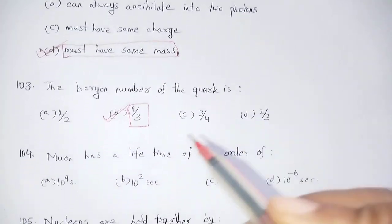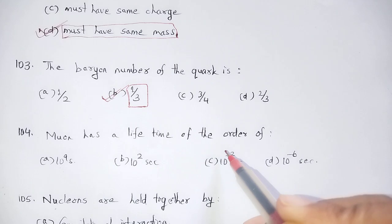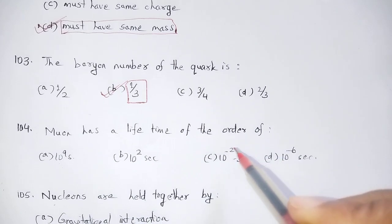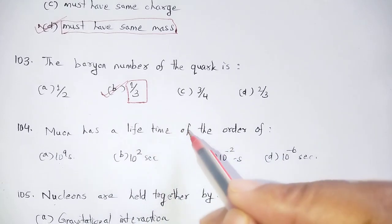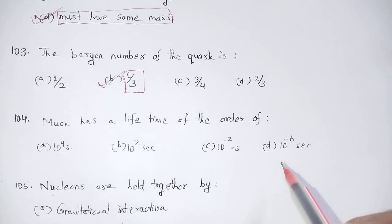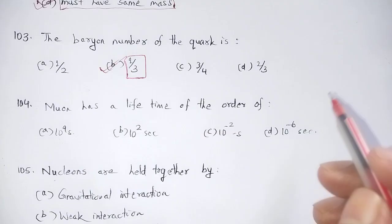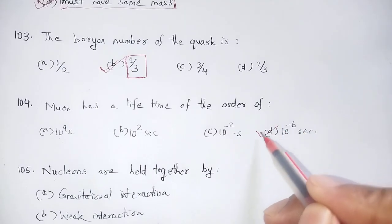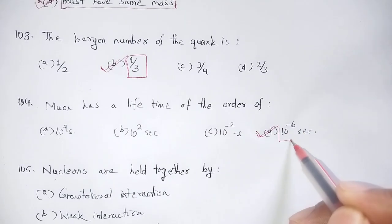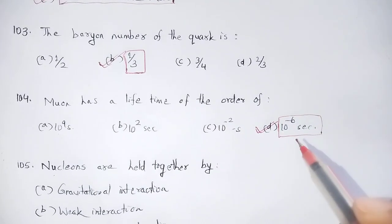The muon has a lifetime of the order of 10 to the power minus 6 seconds. Option number D: 10 to the power minus 6 seconds.